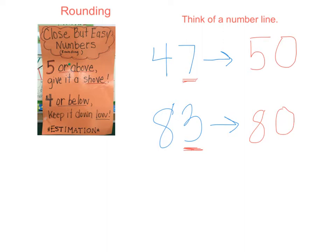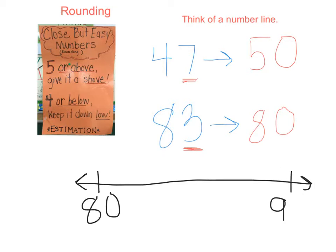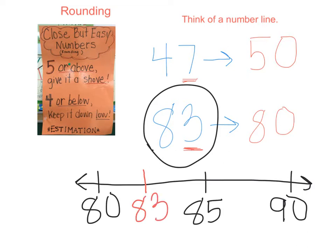Let's look at a number line again, this time for eighty-three. Again, if we think of eighty-three on a number line where one end is eighty and the other end is ninety, where does eighty-three fall? Well, if we know that halfway in the middle of eighty and ninety is eighty-five, then we can determine that eighty-three goes somewhere here, closer to eighty. That is why we round eighty-three to eighty.